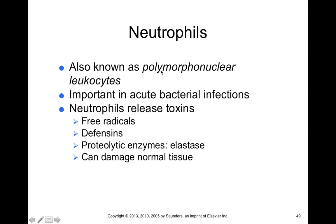Neutrophils, also called polymorphonuclear leukocytes or PMLs, are important in acute bacterial infections and release toxins like fratricins, defensins, and enzymes such as elastase. Although these cells normally help remove dead and damaged tissue and clear infection, they can also damage normal tissue — so excessive neutrophil activity can cause collateral damage to healthy tissue near their site of activity.